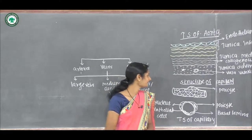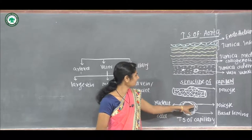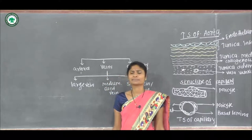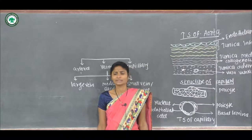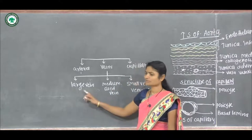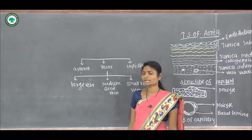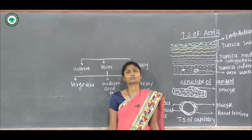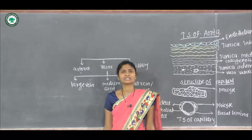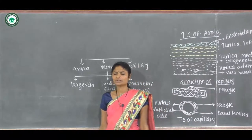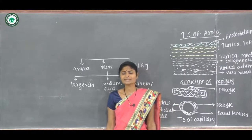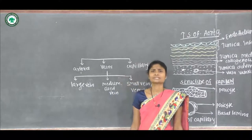Large veins include the precava and innominate veins. Their intima contains endothelial cells resting on the basal lamina, supported by longitudinal collagen and elastic fibers. The media shows thin and poorly developed contents with only a few smooth muscles. The adventitial layer is the thickest part of the wall, consisting of loose connective tissue with elastic and collagen fibers and longitudinal bundles of smooth muscle fibers.